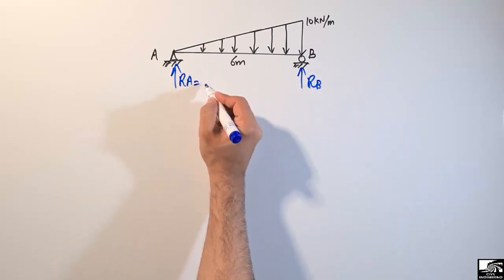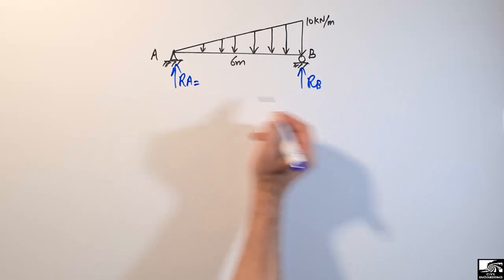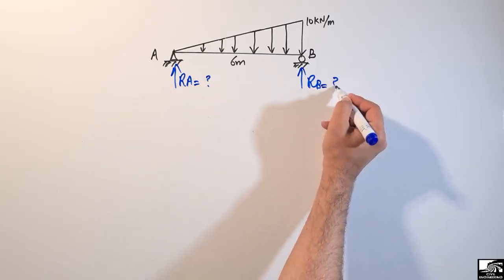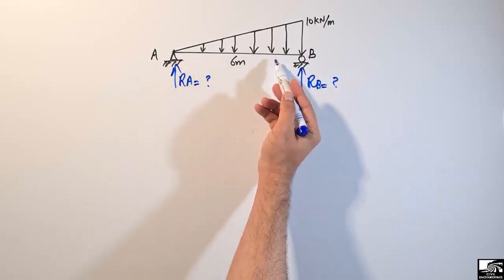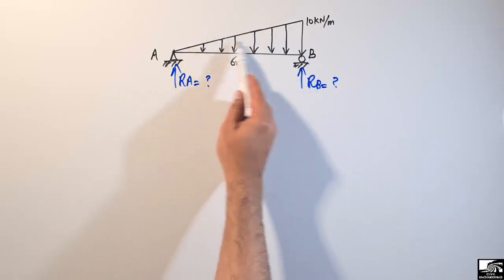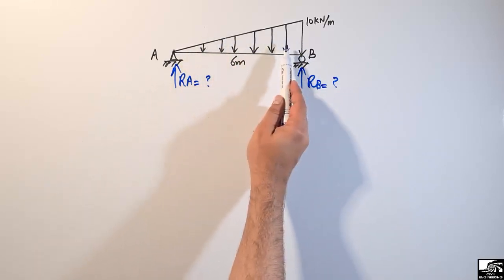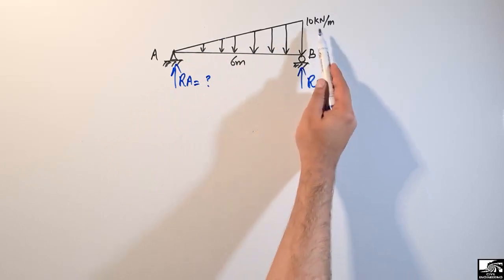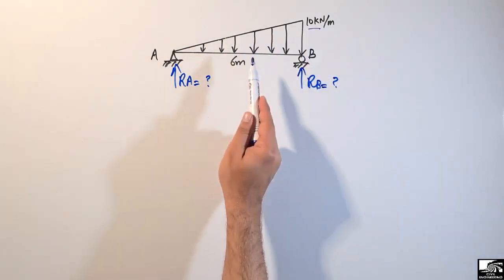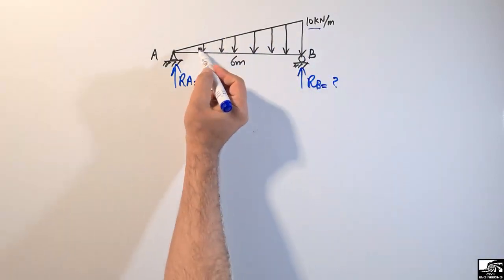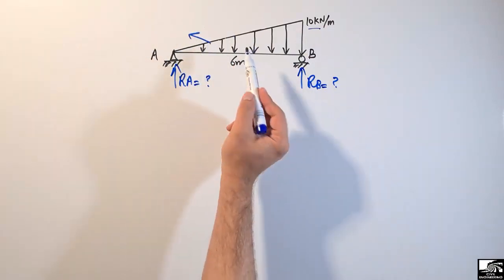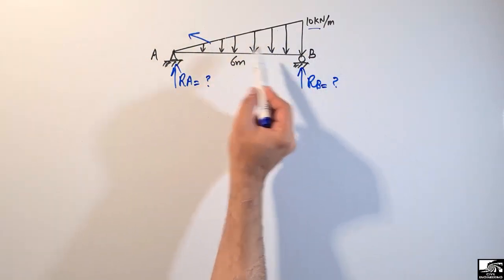Now, how do we find out these support reactions when there is a triangular load acting on the beam? First of all, we have to find out the area of this triangular load in order to convert this uniformly varying load into a point load, and find the total amount of load acting on this beam.